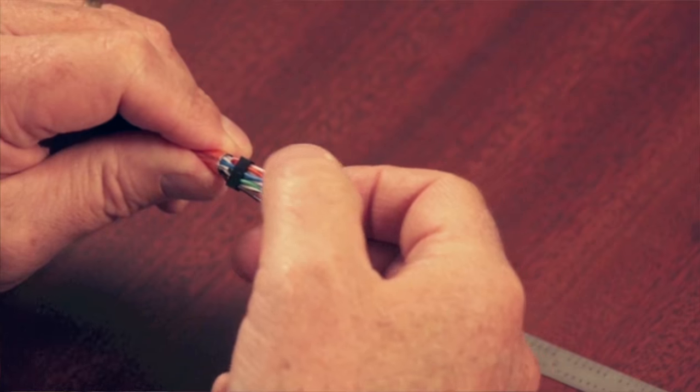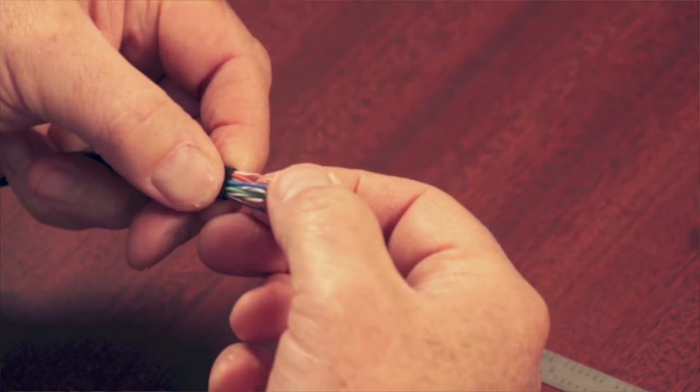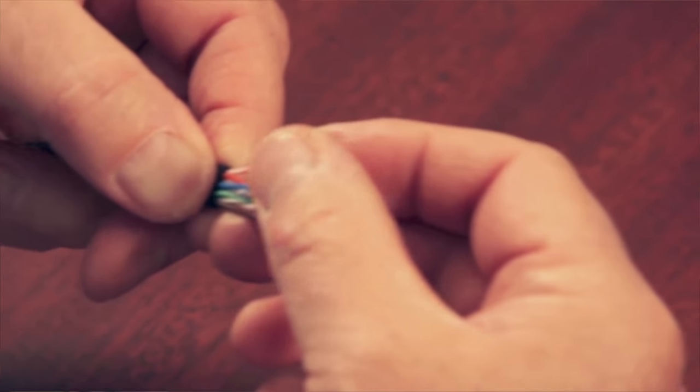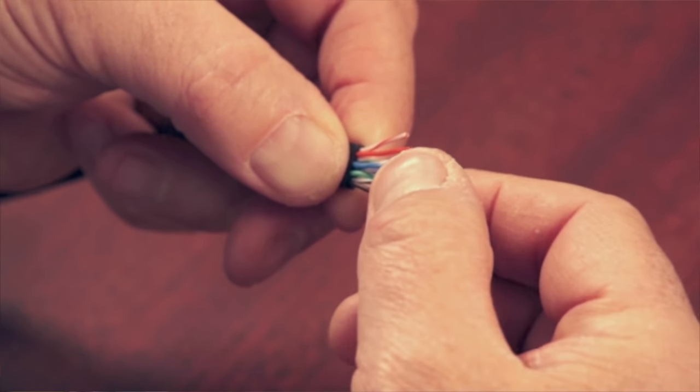You want to validate your color code and make sure nothing moved on you. Make sure your wires are relatively straight still because you don't want them curving over each other when you insert them into the connector.